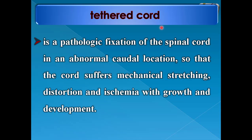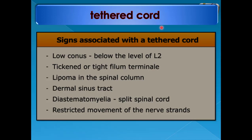Coming to pathology — tethered cord is a pathological fixation of the spinal cord in an abnormal caudal location so that the cord suffers mechanical stretching, distortion, and ischemia with growth and development. Signs associated with a tethered cord include: low conus below the level of L2, tight filum terminale, lipoma in the spinal column, dermal sinus tract, diastematomyelia or split spinal cord, and restricted movement of the nerve strands. Not all signs will be present in each case.